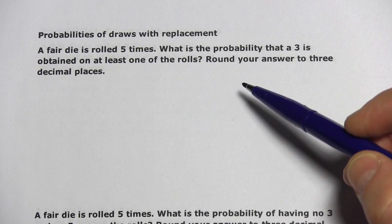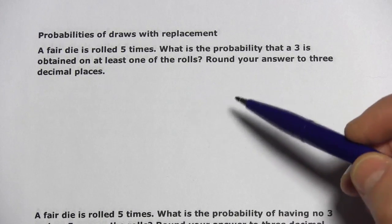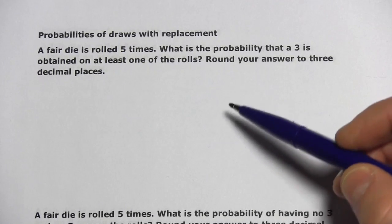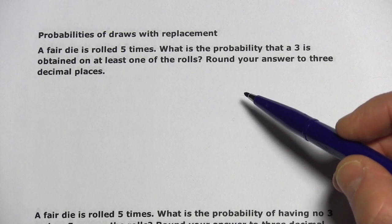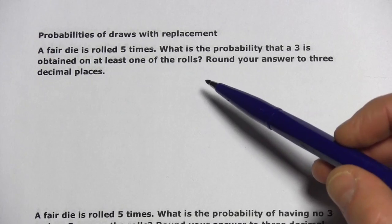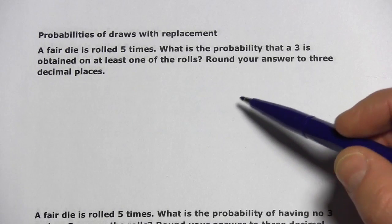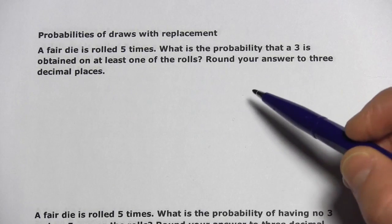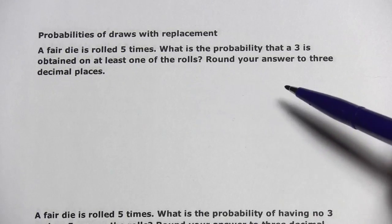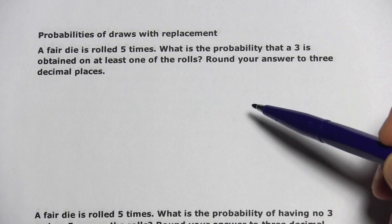Rolling dice is the same kind of thing because the probability of getting a certain number on the die is the same no matter how many times you roll it. Let's look at this first one. A fair die is rolled five times. What is the probability that a three is obtained on at least one of the rolls? Round your answer to three decimal places.